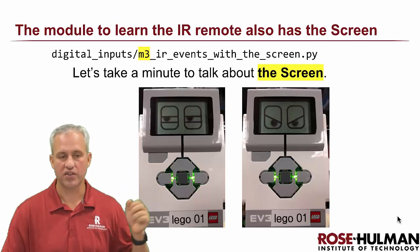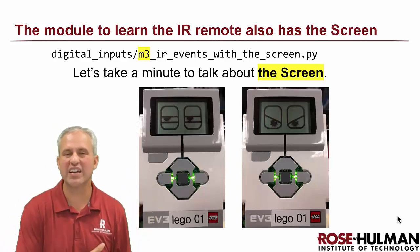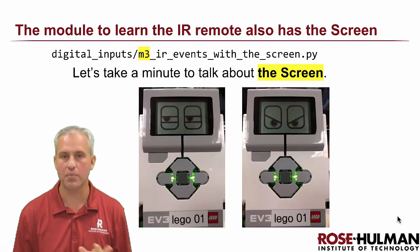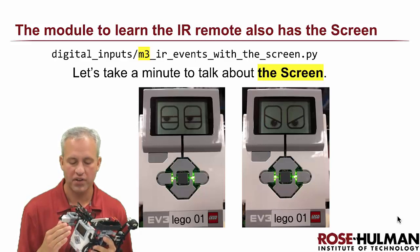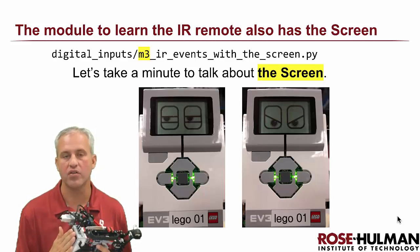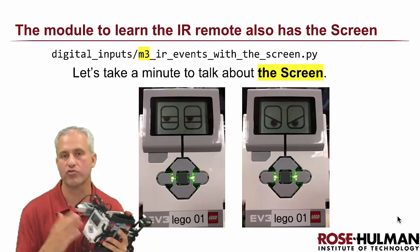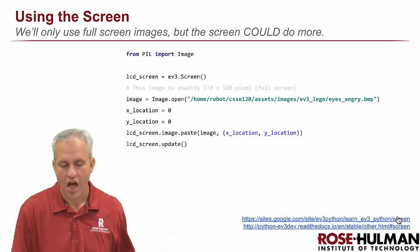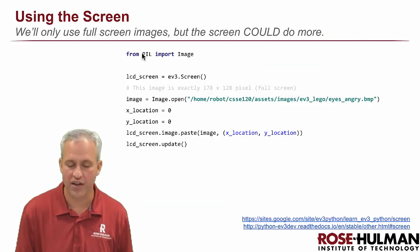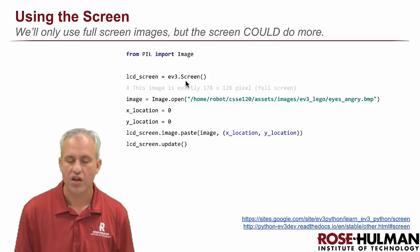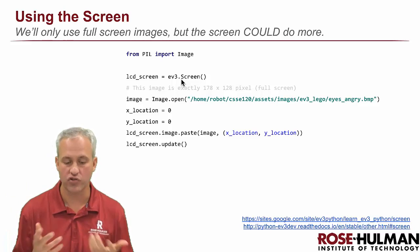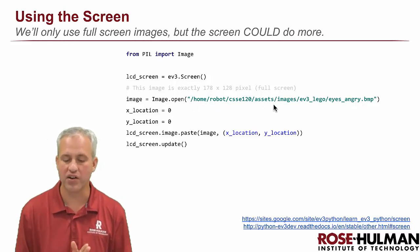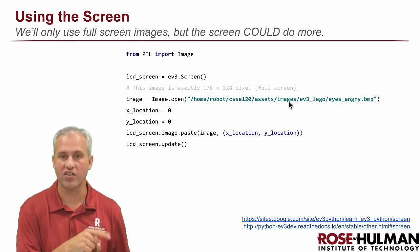M3 is the screen. LEDs are pretty easy, sound is pretty easy, but the screen gets a little more complicated. The screen is black and white and you could display anything on it, just like a computer screen. To keep it simple, the only thing we're going to learn is displaying full-screen images.